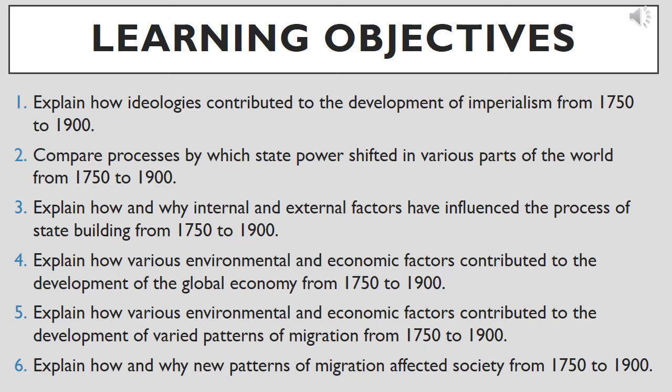Hello everyone, this is Mr. Millett with an AP World History presentation. Today's presentation is all about the age of imperialism. One of the most significant consequences of the first and second industrial revolutions was the great division they created between the world's societies that did industrialize and those that did not industrialize, or industrialized in minimal amounts. This underdevelopment left these societies vulnerable to the economic, cultural, and militaristic expansionism of the industrialized world, leading many industrialized powers to dominate and exploit non-industrialized societies.